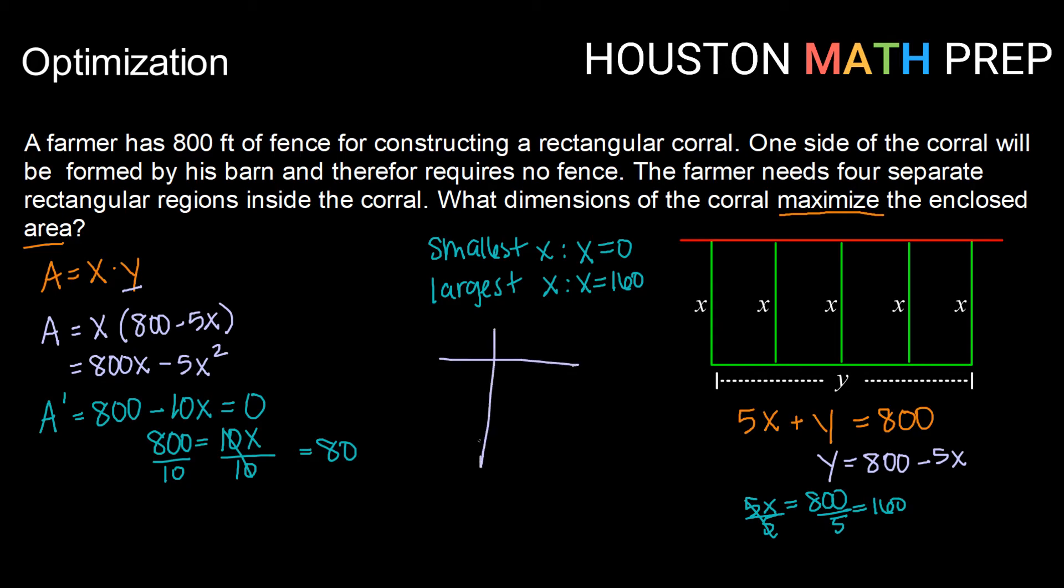All right, so now we want to test each of our end points and our critical point by plugging them back into our area function and seeing which value leads to a maximum area. So we have 0, 80, and 160 that we want to test.